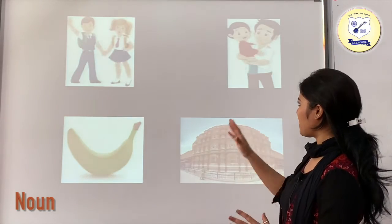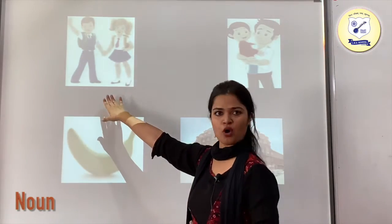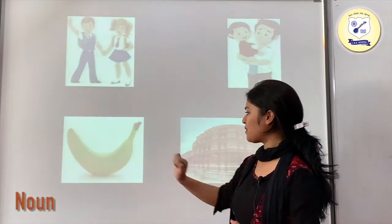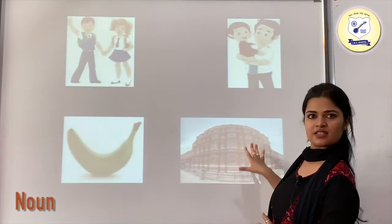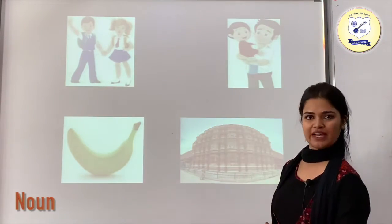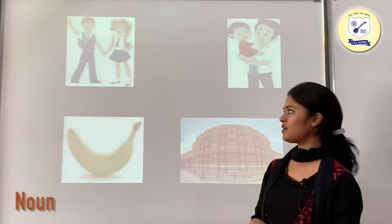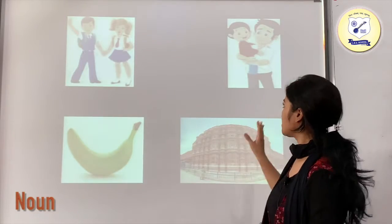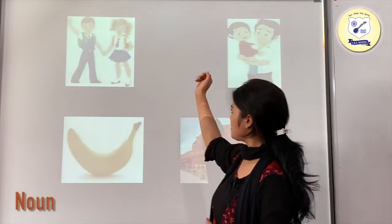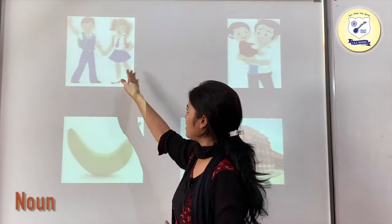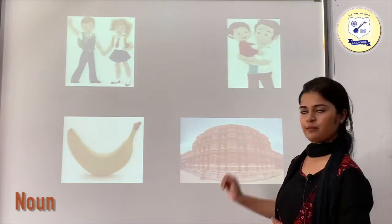We have a few pictures in front of you. We have a boy and a girl in this picture, a banana in this picture, this is the picture of a place, and this is a father holding his son in his arms. This is an example of people, which is a noun. This is also people, this is a thing, and this is a place.